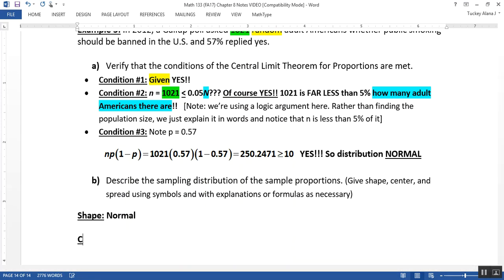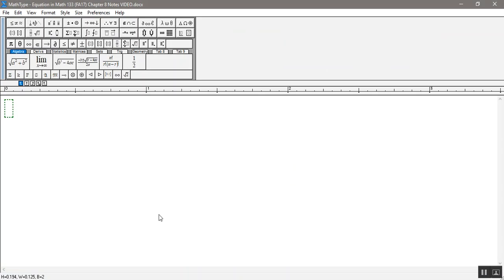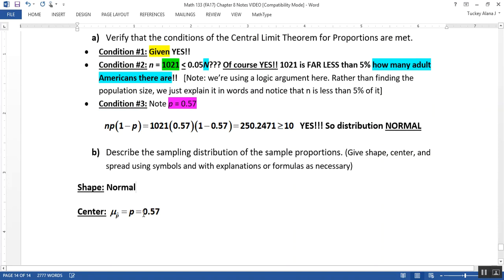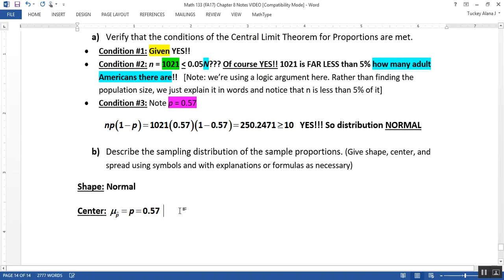Then we need the center. The center is going to be the mean of this distribution, the mean of the p-hats, which according to our central limit theorem is equal to p, which according to our problem is equal to 0.57 right here. 57% right there. That's our p-hat, our assumed p-value right here. The population proportion p is 0.57. So down here, that will be the center of my distribution.